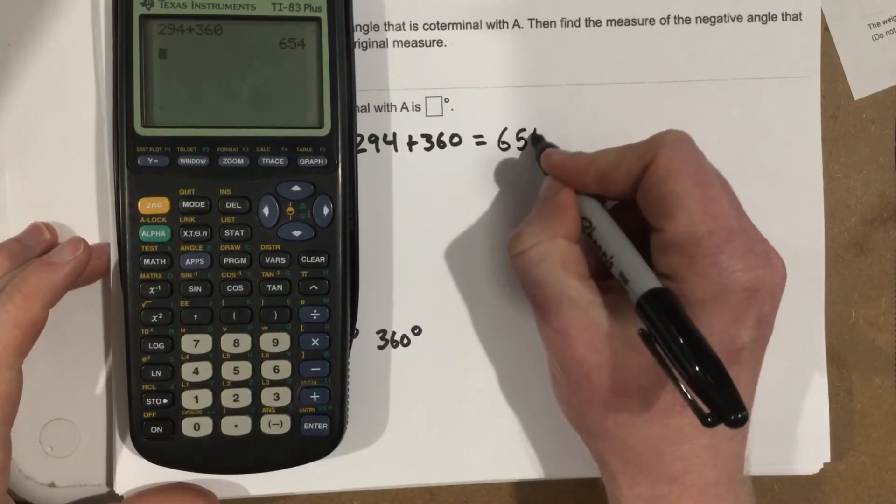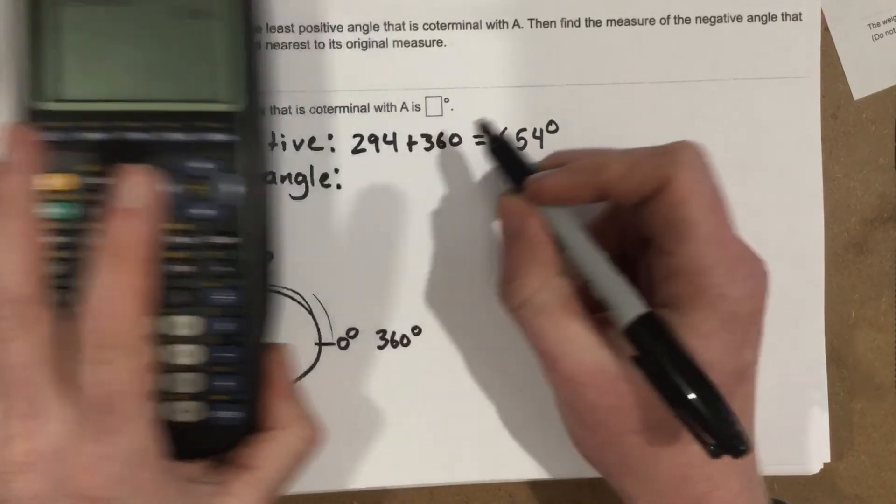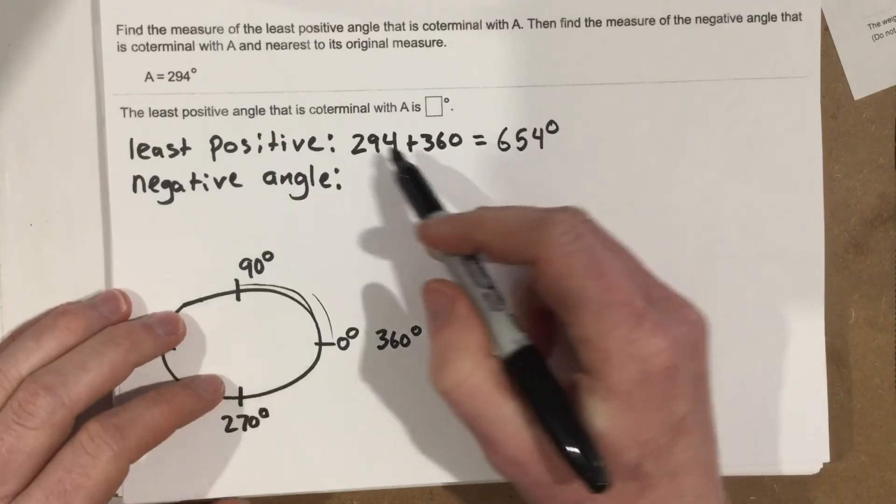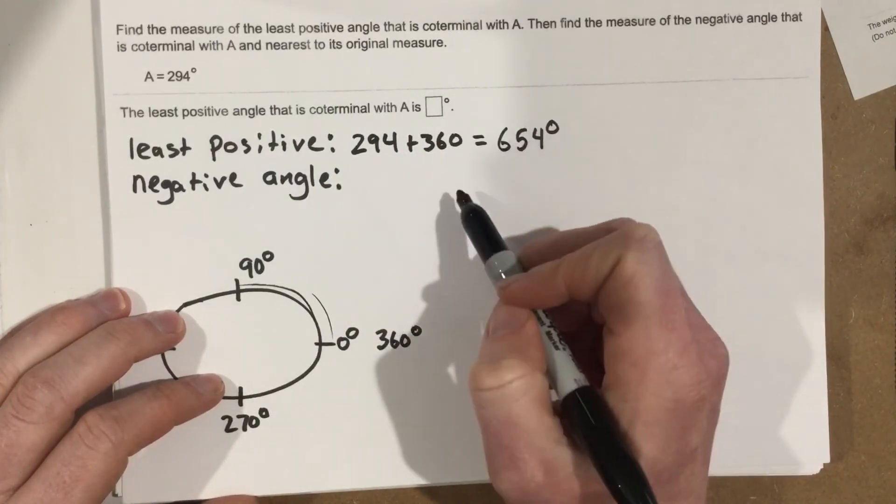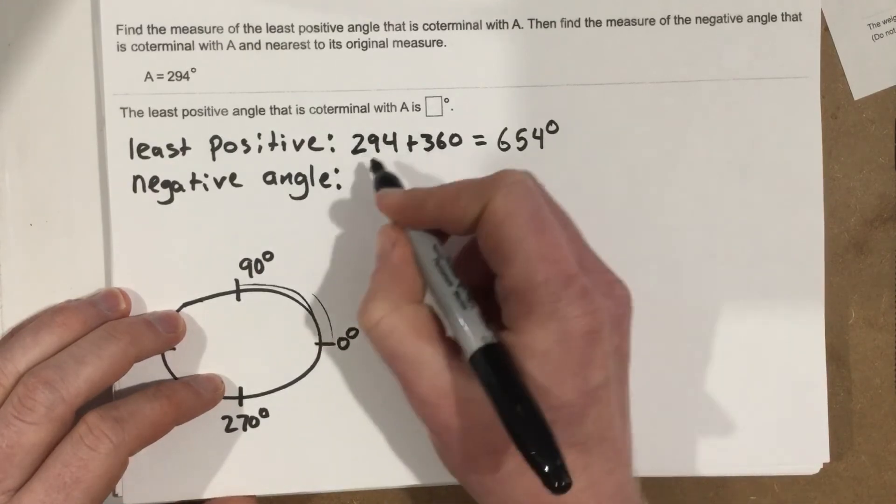So the angle of 294 has a coterminal angle which is 654 degrees, and that's our least positive one.